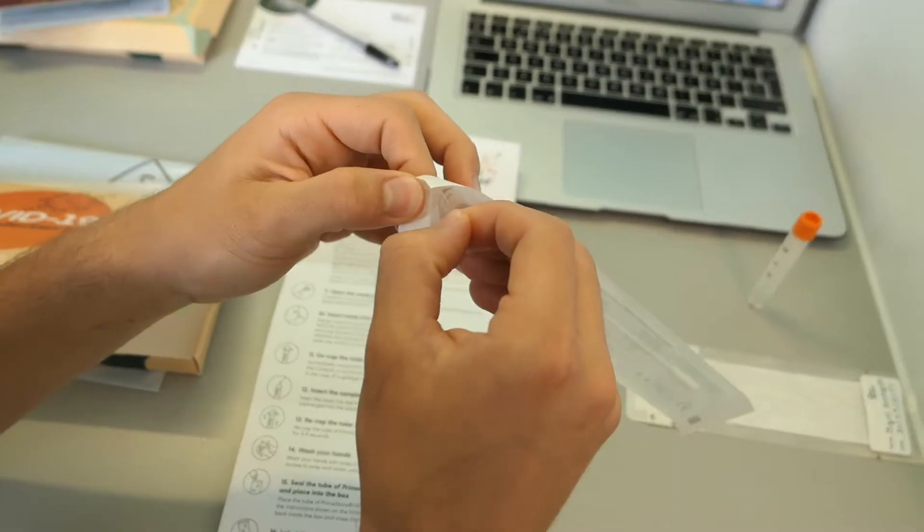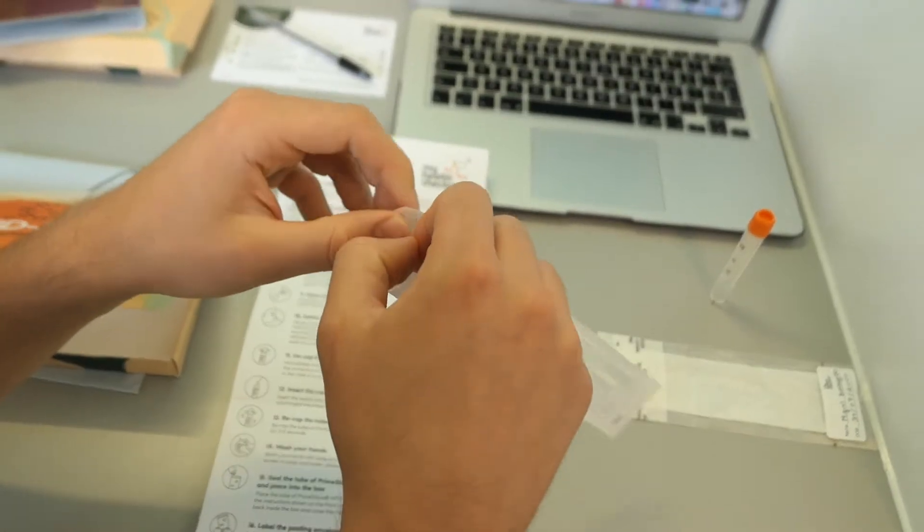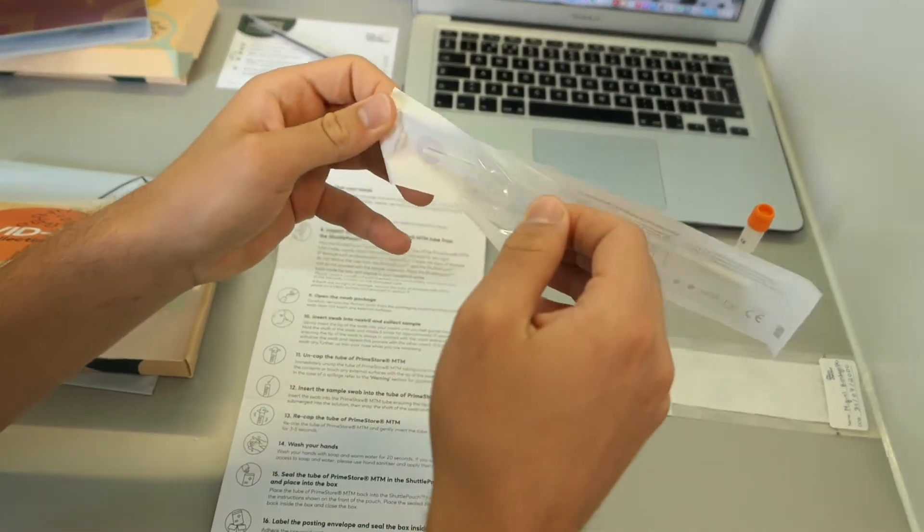When you're finally ready to collect your sample, make sure you first wash your hands with soap and warm water for 20 seconds. Also, check your nose and, if necessary, gently remove any visible mucus with a tissue. If there are no signs of leakage, remove the tube of Primestore MTM and place it on a clean surface.